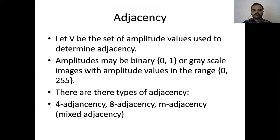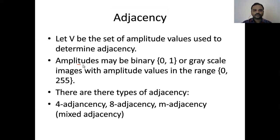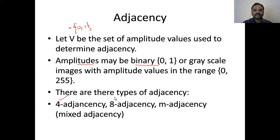Let V be the set of amplitude values used to determine adjacency. Amplitude values may be binary — that is, the set V is defined as binary values {0, 1} — so it's a binary image, or grayscale images with amplitude values in the range 0 to 255. So this set V may represent either a binary image or a grayscale image.